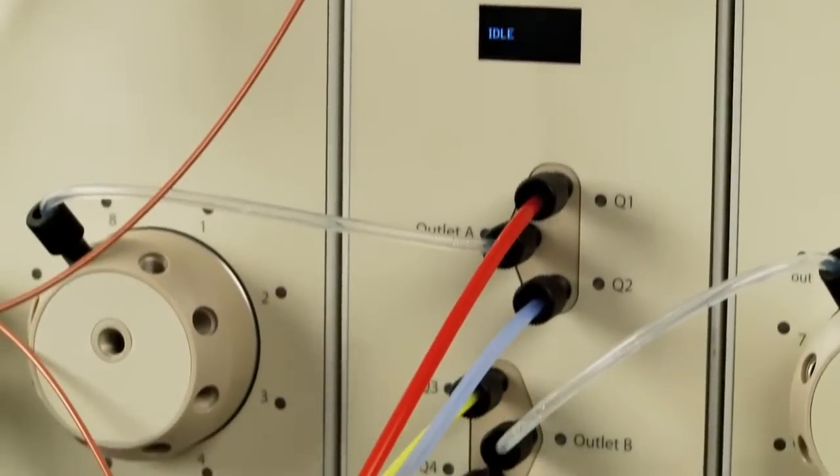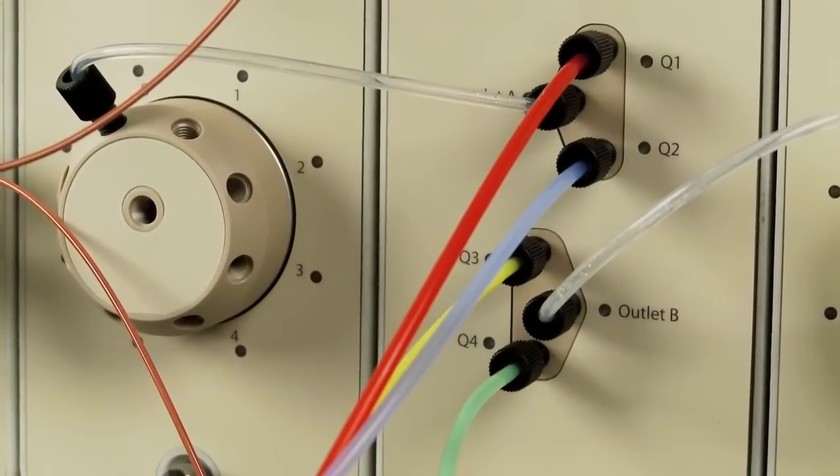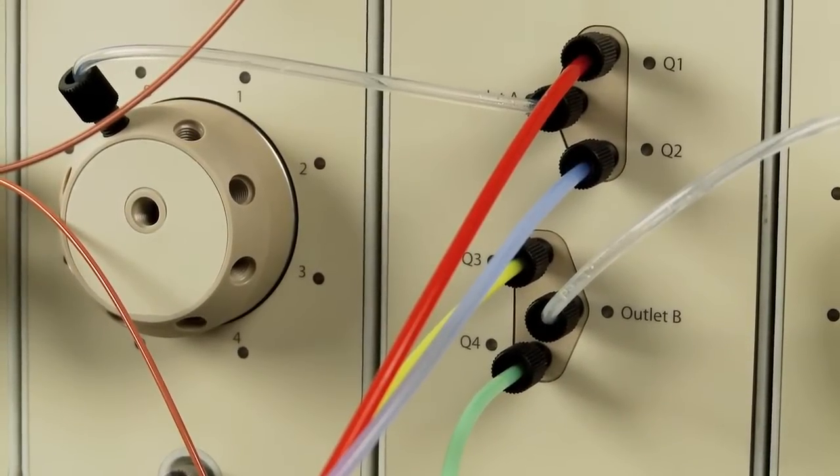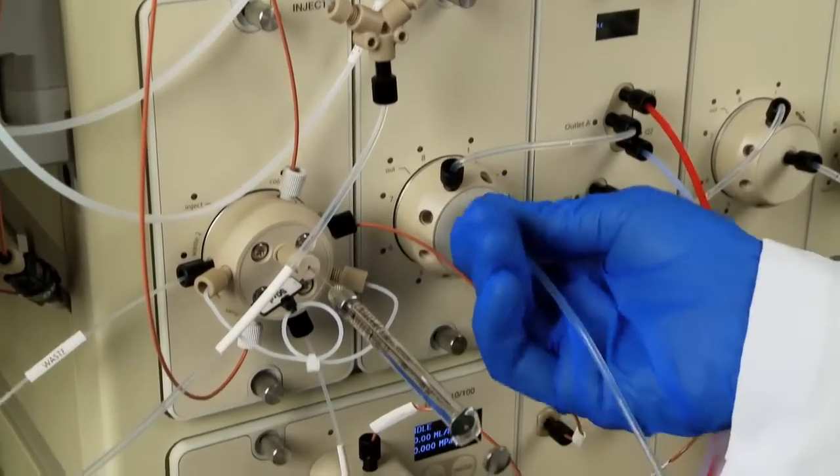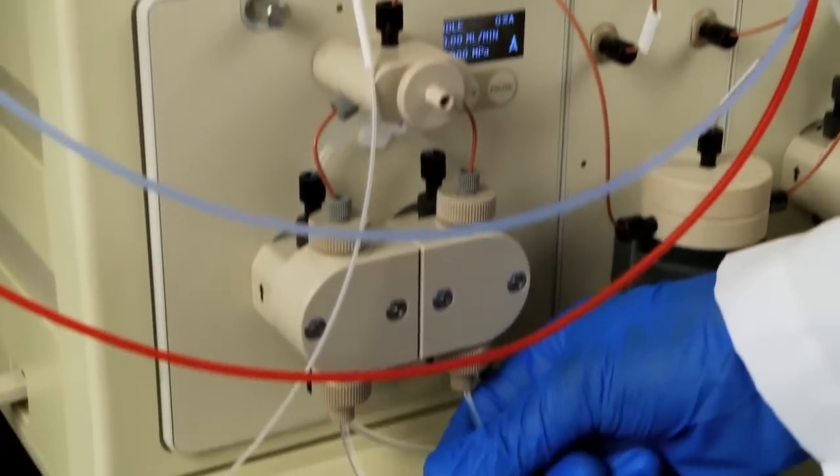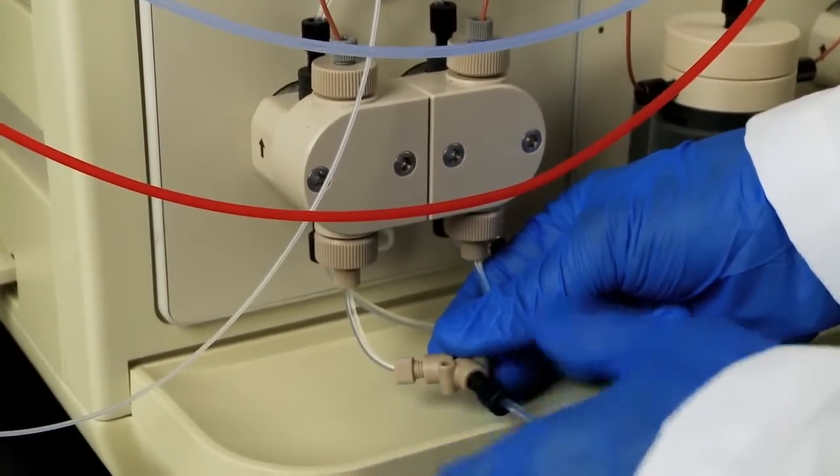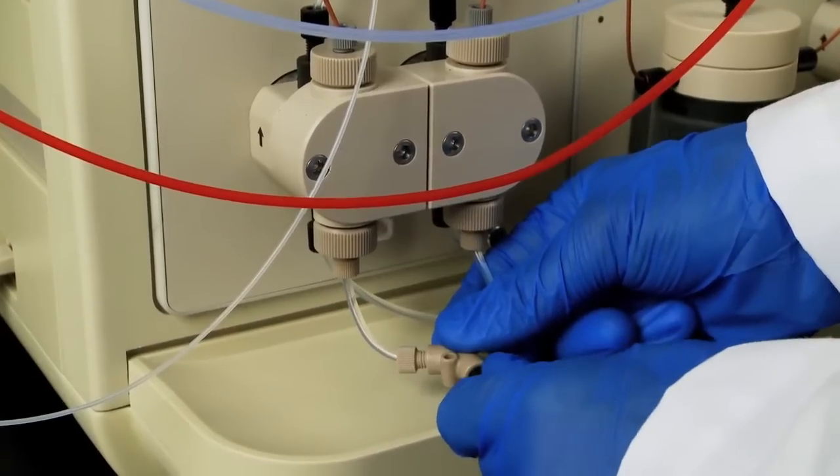The buffer inlet lines are color coded based on the solution that they represent. Refer to the NGC installation guide for more details. Attach line number 6 to the outlet port of buffer inlet valve A, and then attach the other end to the inlet manifold for pump A.